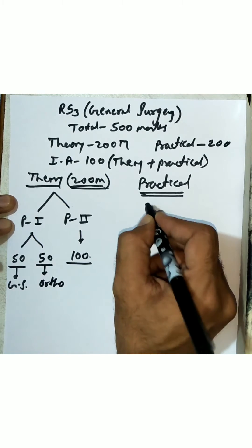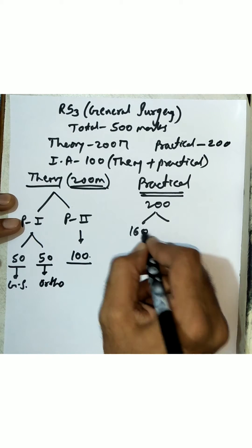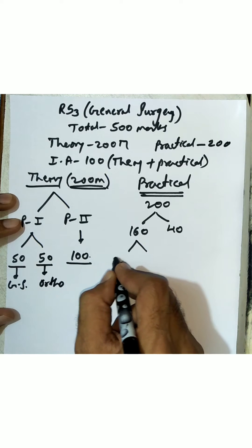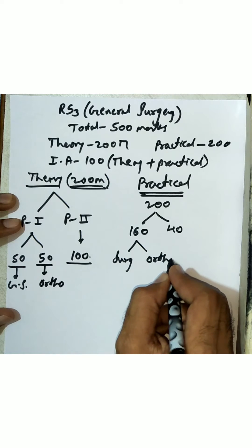Now let's see about the practicals. Practicals is totally for 200 marks which is split up into 160 plus 40 marks of viva voce. The 40 marks is for viva voce and 160 is for your practicals which is further split up into surgery and orthopedics.